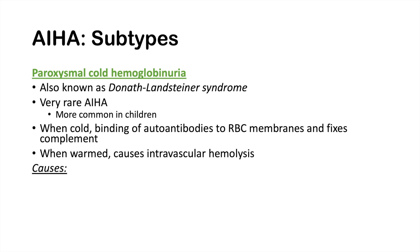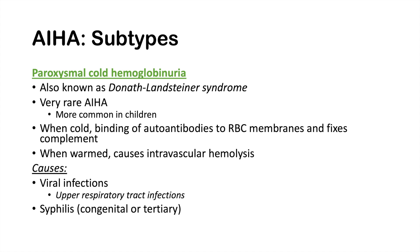Causes of paroxysmal cold hemoglobinuria include viral infections — mainly upper respiratory tract infections, which are the most common cause in children — and syphilis, specifically congenital or tertiary syphilis. The key takeaways are that it's a rare autoimmune hemolytic anemia most common in children, requiring both cold temperatures for antibody binding and complement fixation, and warm temperatures for intravascular hemolysis.